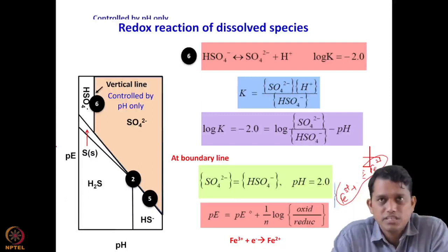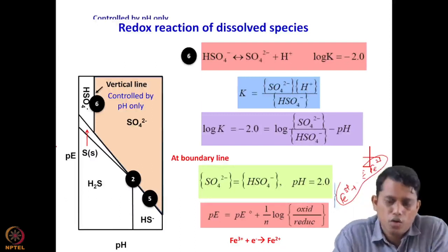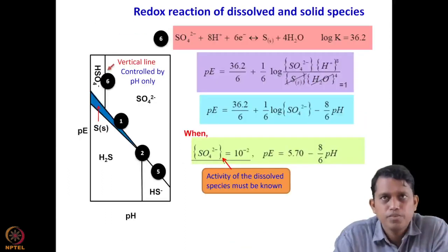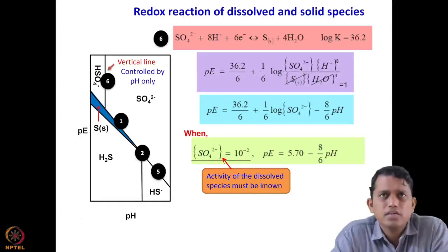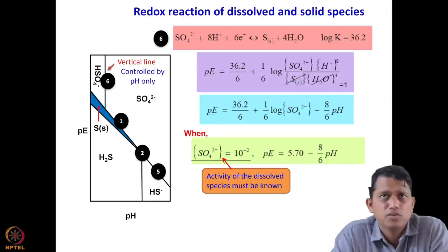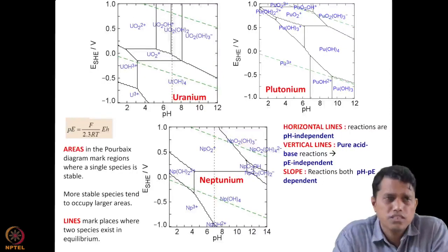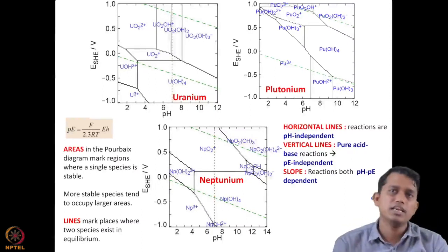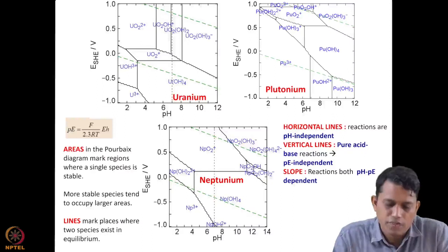For redox systems involving only electron activity — such as Fe3+ plus one electron giving Fe2+ — we get a horizontal line on the PE-pH diagram. The line type thus indicates what controls the equilibrium: horizontal lines are controlled only by electron activity (PE), vertical lines only by proton activity (pH), and slant lines by both simultaneously.